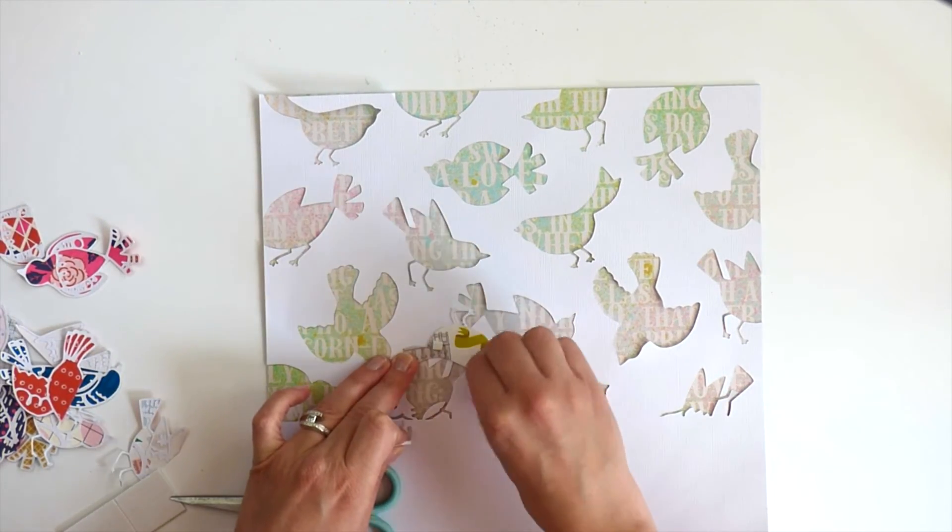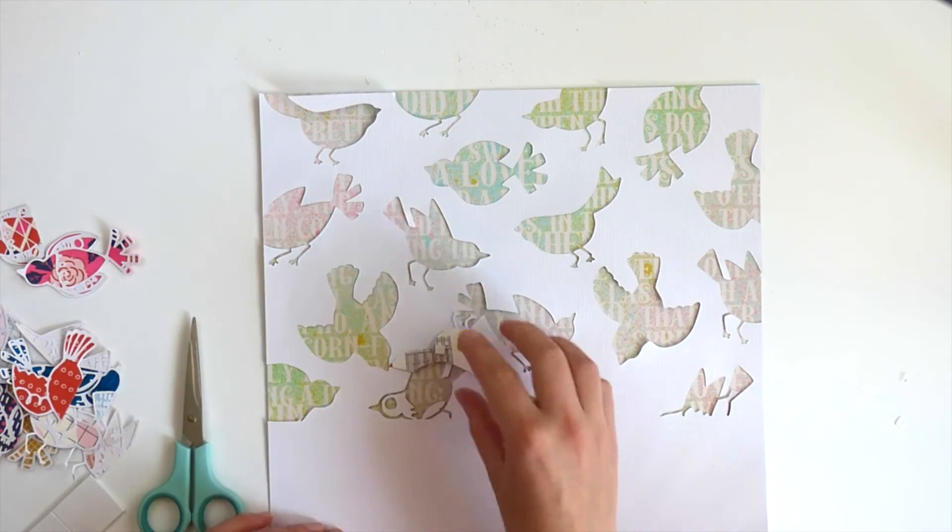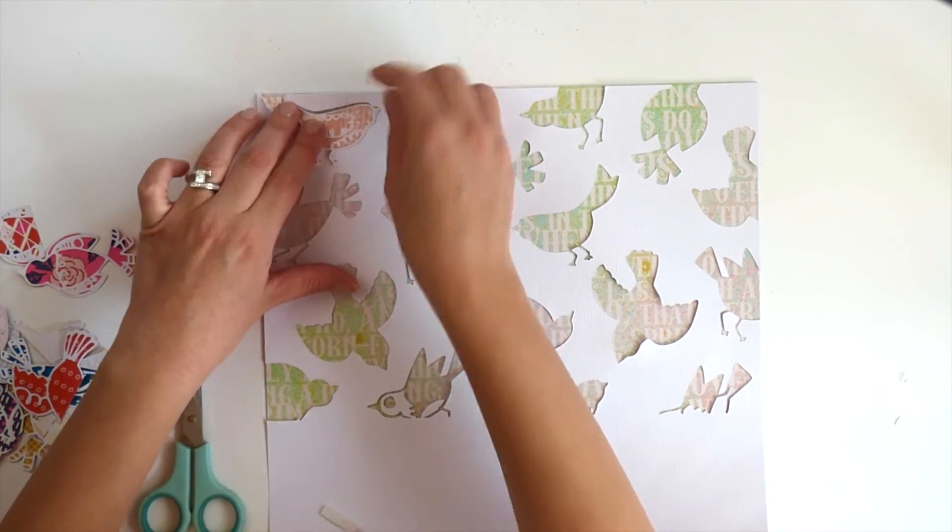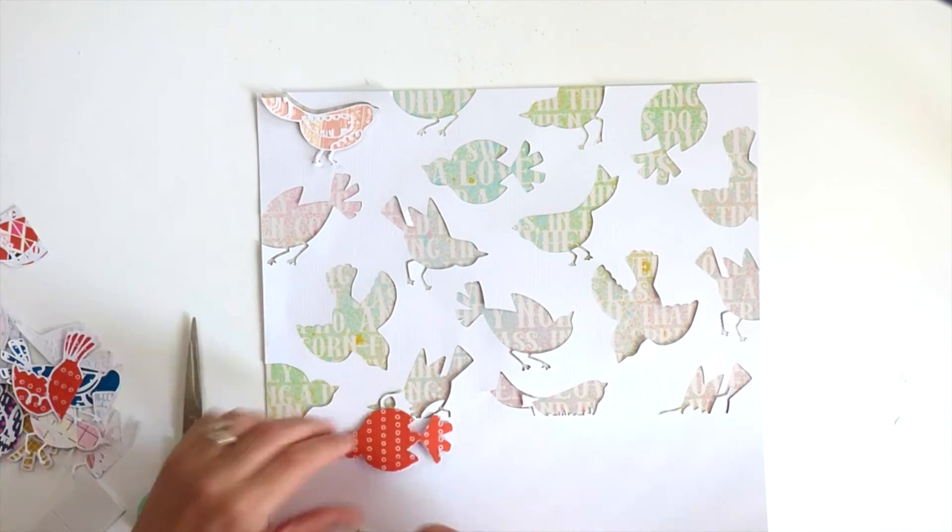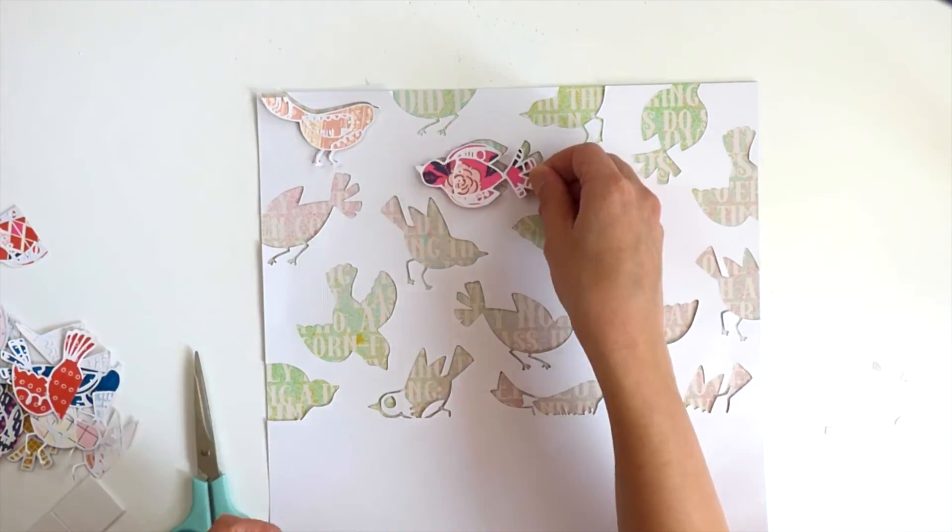I just used two pieces of foam adhesive on each bird. And then place it right back over where it belongs. Just a little off-center. A little helter-skelter.